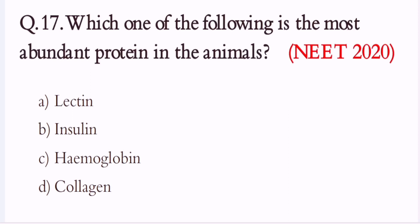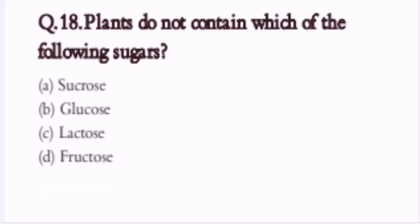Question 17. Which one of the following is the most abundant protein in the animals? A. Lectin. B. Insulin. C. Hemoglobin. D. Collagen. The correct option is D. Collagen.